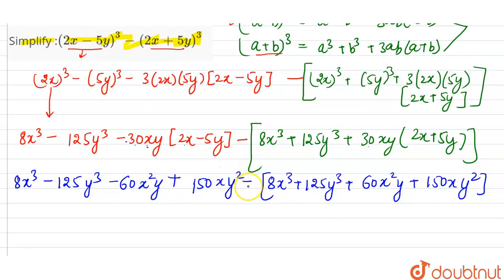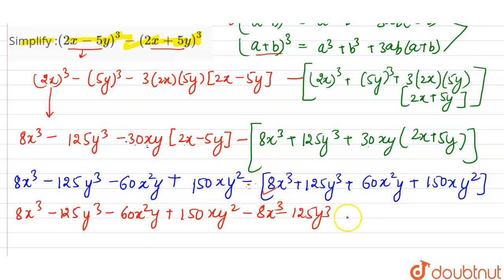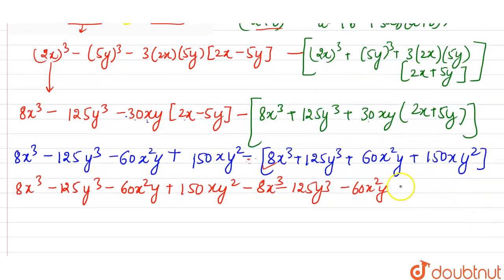Now let's open up the bracket. We have a minus sign outside the second bracket, so we change all the inner signs. The full expression becomes: 8x cube minus 125y cube minus 60x squared y plus 150xy squared, minus 8x cube minus 125y cube minus 60x squared y minus 150xy squared.